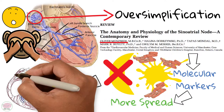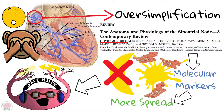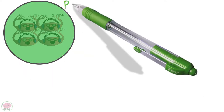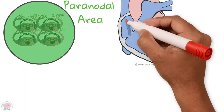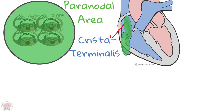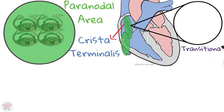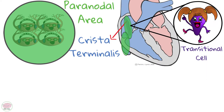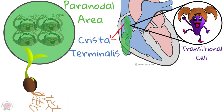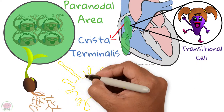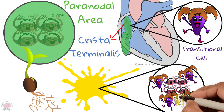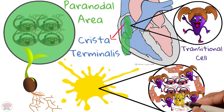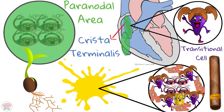The node is mainly composed of nodal cells that generate the electrical impulse. These nodal cells are surrounded by a paranodal area located along the crista terminalis, which can even extend into the inferior vena cava. This area has transitional cells that may also play a role in pacemaking. Rather than thinking about the SA node as a single structure, think of it as a seed that is sprouting roots — the tissue literally starts to mix with the paranodal area and regular cardiac myocytes, sometimes extending down the crista terminalis with a cigar shape.